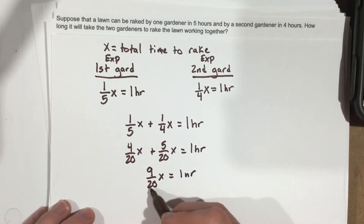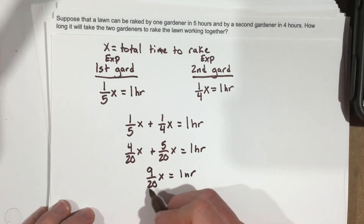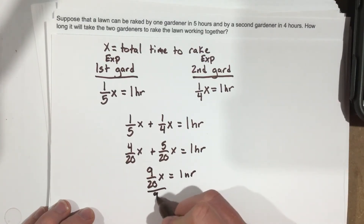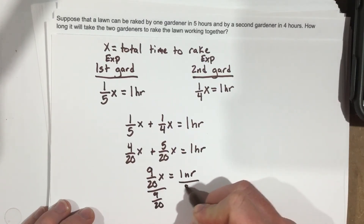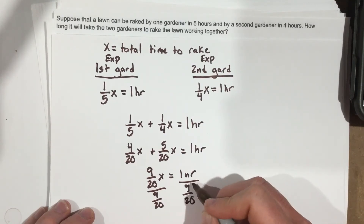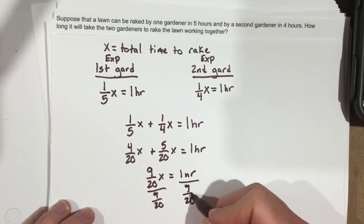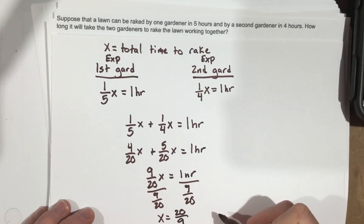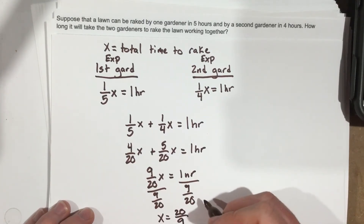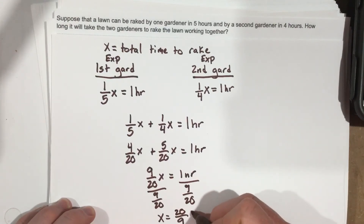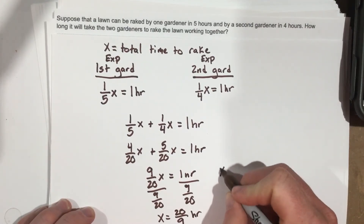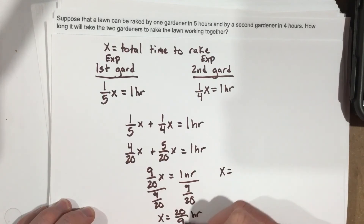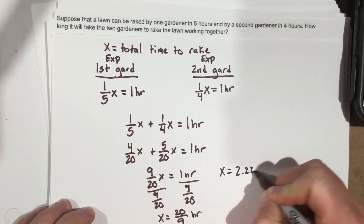Then we divide each side by 9 over 20. When you divide by a fraction, you flip and multiply, so you end up with x equals 20 over 9, which is 2.22 hours.